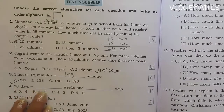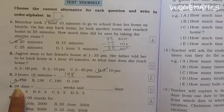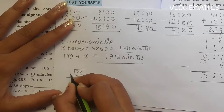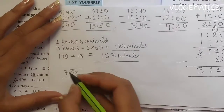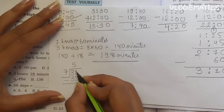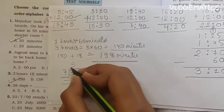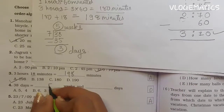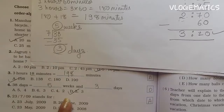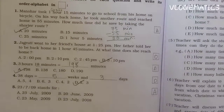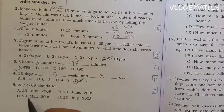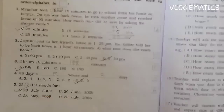Number 4: 38 days equals how many weeks and days? 1 week equals 7 days. Dividing 38 by 7: 7 times 5 equals 35, remainder 3. So 38 days equals 5 weeks and 3 days. Answer is B. Number 5: 23-7-2009. Seven stands for July, so the date is 23rd July 2009. Answer is A.